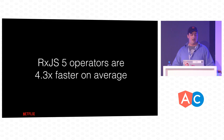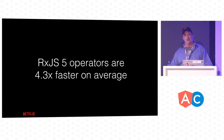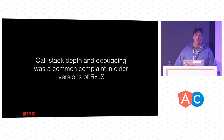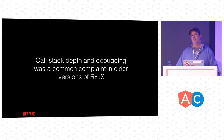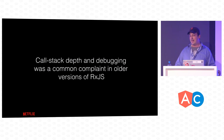RxJS 5 operators are 4.3 times faster on average, and some are up to 26 times faster depending on what you're looking at. The other win was for debuggability — the call stack depth is much, much lower now. It was a common complaint around Netflix: you'd be trying to debug something in your Rx stack, look at the call stack, and have no idea where you are.